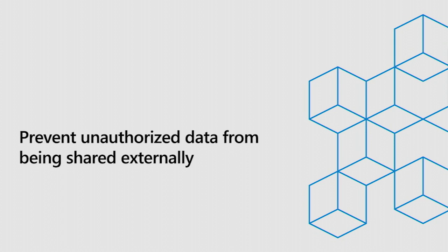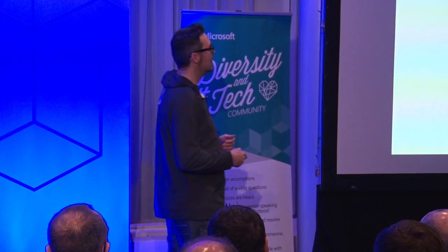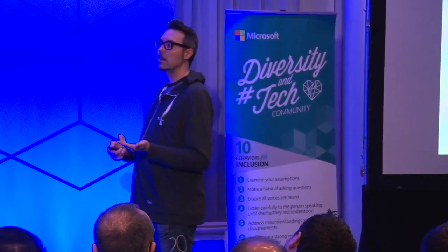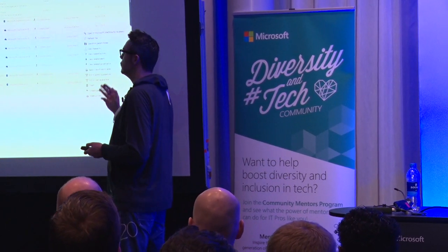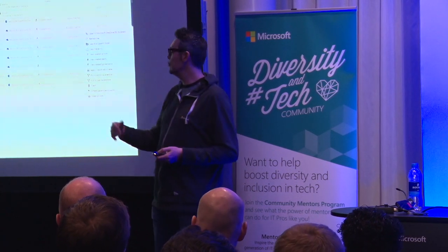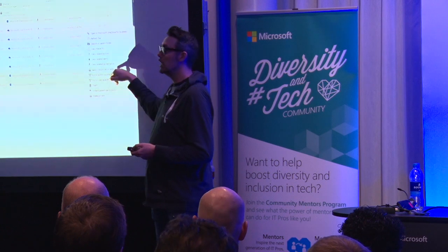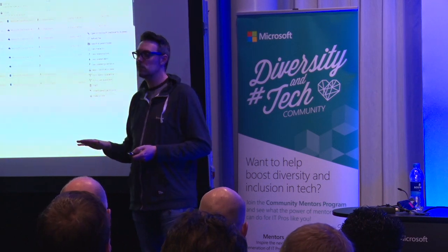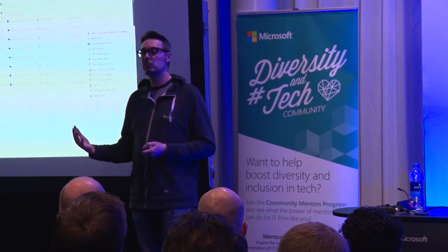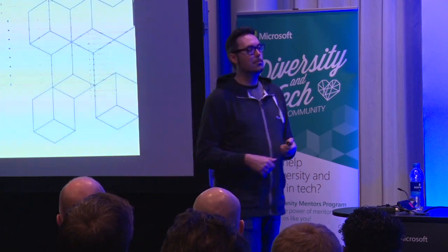Information protection is another use case — preventing unauthorized data from being shared externally or anonymously. In Cloud App Security, you can click a filter and ask for all files from an application that are shared externally. Based on your investigation, you can take governance actions like removing external users, making files private, or applying a classification label to ensure external users cannot do something malicious with it.